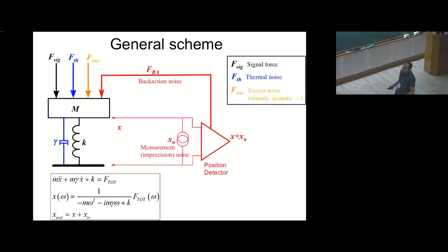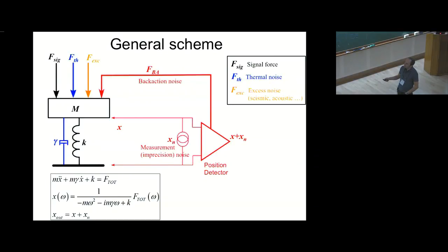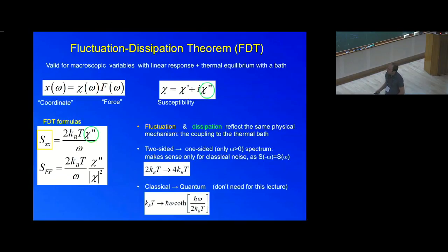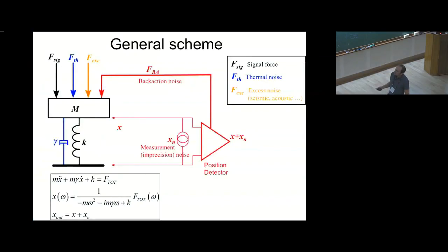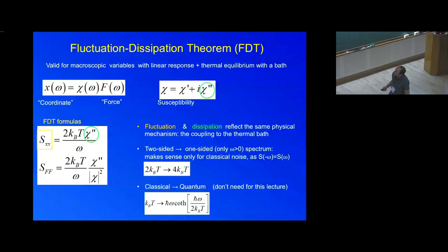From the mathematical point of view, this is a very straightforward system — just the harmonic oscillator with a driving force. In the frequency domain it defines a mechanical susceptibility, which describes how much the system responds to an external driving force in terms of displacement. We measure the displacement, and the input is a force. The most annoying and most fundamental limitation in measurement is the thermal noise. Thermal noise can be described very well by the fluctuation-dissipation theorem.